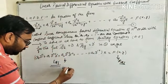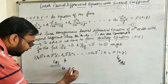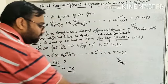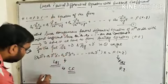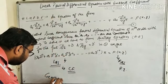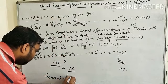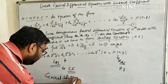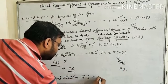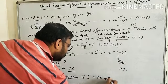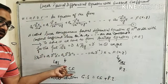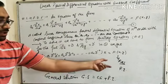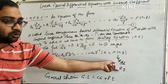From the LHS, we find the complementary function (CF). From the RHS, we find the particular integral (PI). The general solution is GS = CF + PI. In this lecture, we will study about CF only, and in the next lecture we will study about PI.